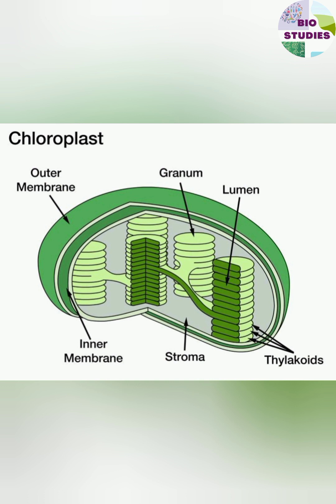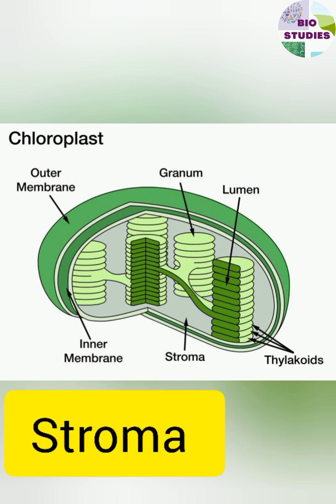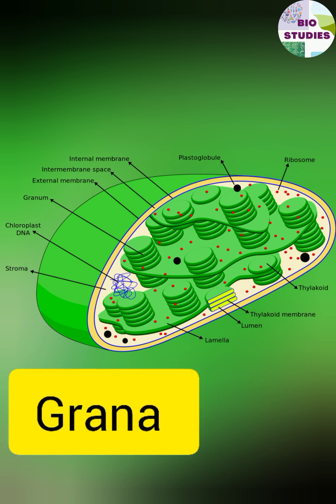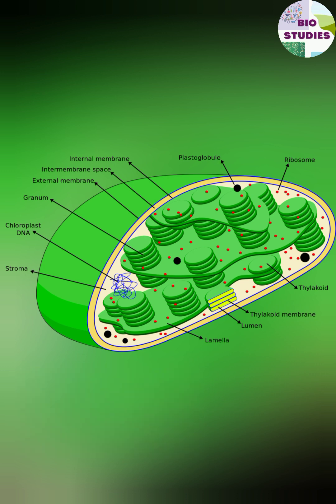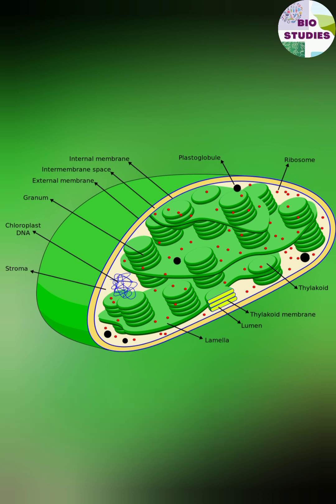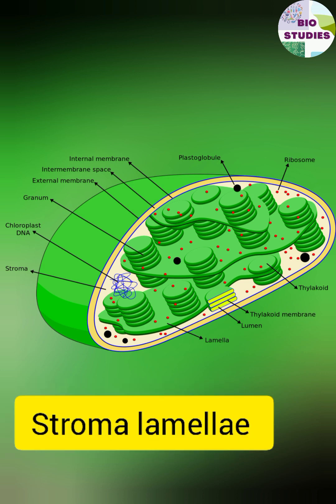The fluid that is present inside the chloroplast is known as stroma. Inside it, there is a stack-like structure called grana, and each disc-like structure of grana is known as a thylakoid. The interconnections between grana are known as stroma lamellae.